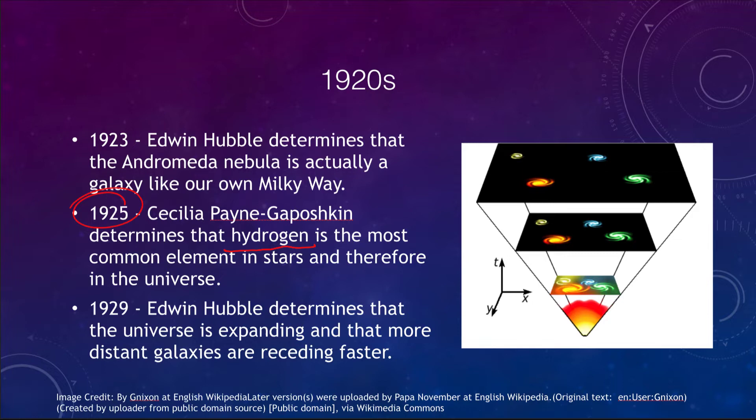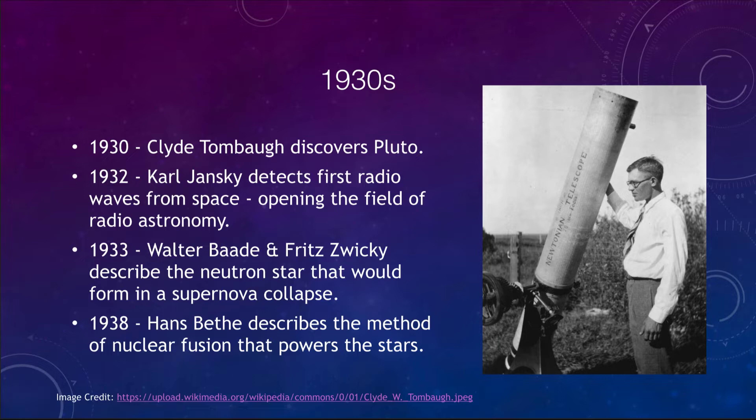Also in the 1920s, Edwin Hubble determined that the universe is expanding and that distant galaxies are receding even faster. Prior to this, before the 1920s, we did not realize that there were other galaxies, that hydrogen was the most common element in the universe, or even that the universe was expanding.